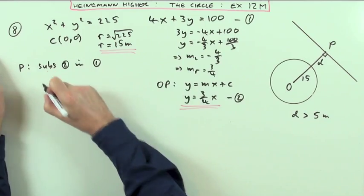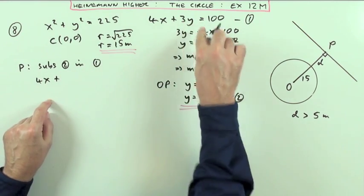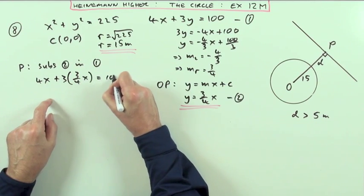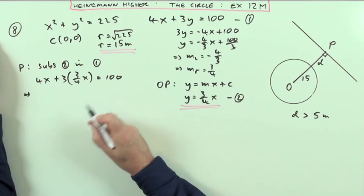Where it says y, I'll write 3/4x. So I've got 4x + 3 times the y, which is 3 times 3/4x, equals 100.